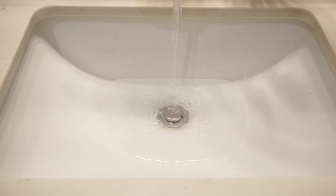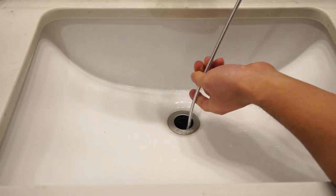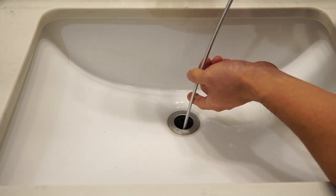Let's also try out the metal snake on another sink. Again, the water in this sink is backing up and draining very slowly. So we'll remove the plunger, then push the snake down into the drain until we meet some resistance.